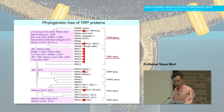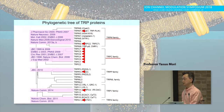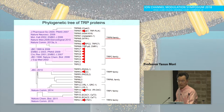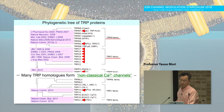To functionally characterize TRP channels, we have mainly used recombinant systems, knockout cells, and knockout mice. According to our own data and also data obtained by numerous groups all around the world, we think that there are two important functional aspects of TRP channels.